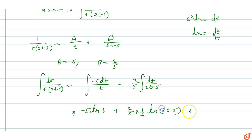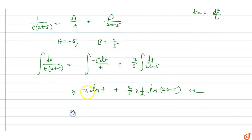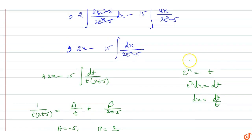Now we replace t with eˣ. So -1/5 ln(eˣ) becomes -x/5, since ln(eˣ) = x. And (1/5) ln(2eˣ - 5) plus c remains. Multiplying through by 15 from the earlier factor gives the complete expression.